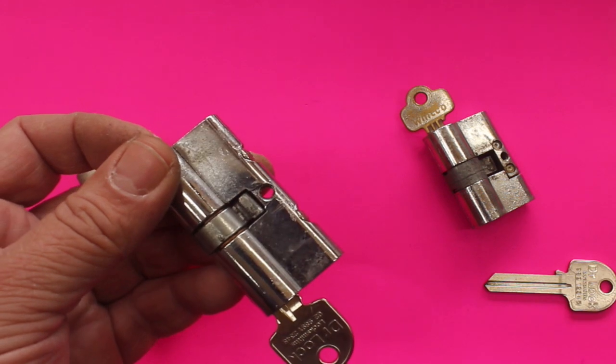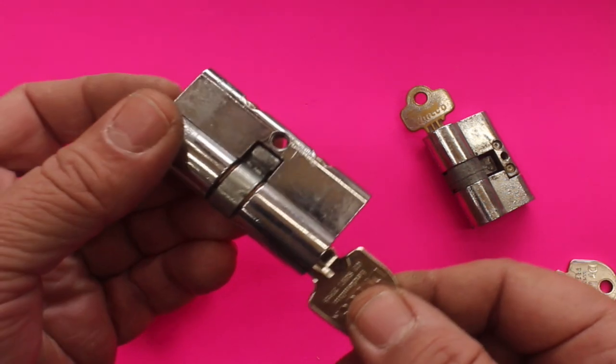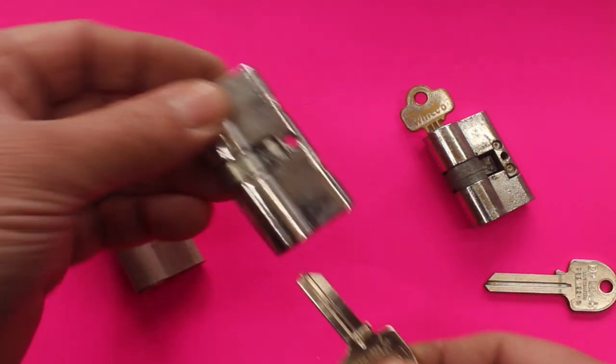If you purchase from us, we can actually match your order. So if you order a deadbolt and you want your screen doors to match, we can do that. Generally, we'll be using a five pin cylinder to do that.